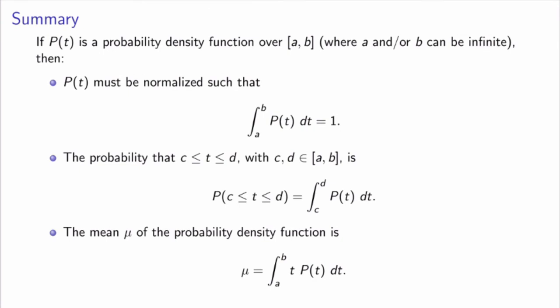Let me end with a brief summary. If P of T is a probability density function defined over a closed or infinite interval, then first, P of T must be normalized: the integral of P of T over its domain must equal exactly one. Second, the probability that T is between two points C and D in the domain is the integral of P of T from C to D. Third, the mean is the integral of T times P of T over the domain. Other interesting quantities — like the median and standard deviation — will be defined and explored in class.